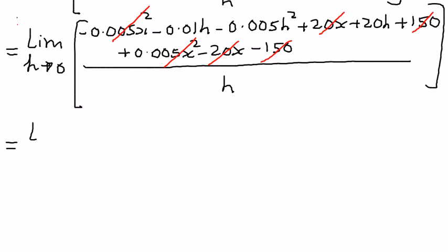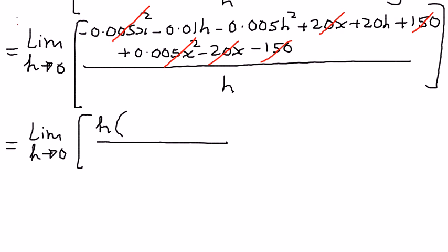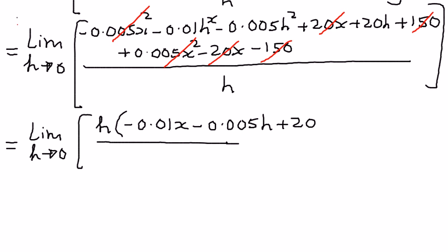We are left with the limit as h approaches 0. The remaining terms in the numerator are negative 0.01xh, minus 0.005h squared, plus 20h. All of these have a common factor of h, so we pull out h. This gives h times negative 0.01x, minus 0.005h, plus 20, divided by h. The h in the numerator and denominator cancel out.